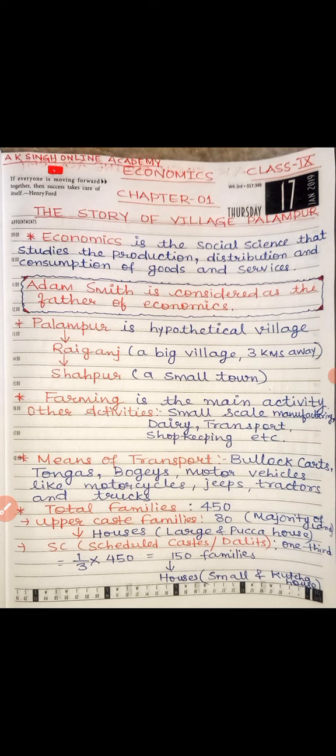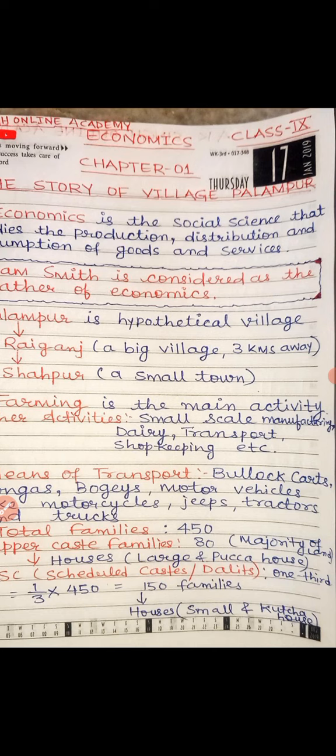As you know, in most villages the main activity and main occupation is farming, i.e., agriculture. In Palampur too, the main activity of the people is farming. Apart from farming, people also do other activities such as small-scale manufacturing at the household level, dairy production — making and selling milk and milk products — transportation, shopkeeping, et cetera.